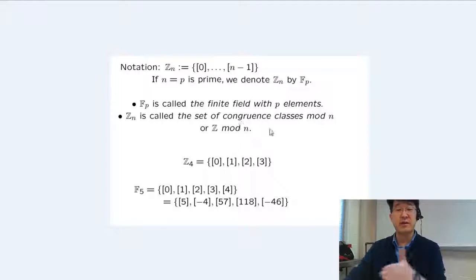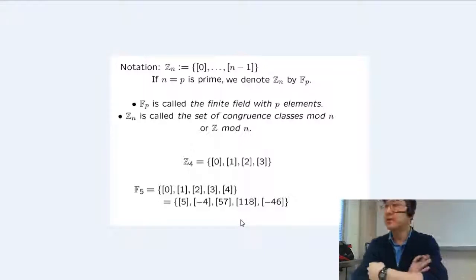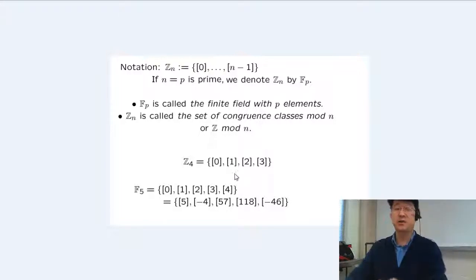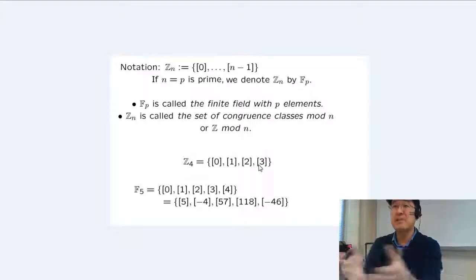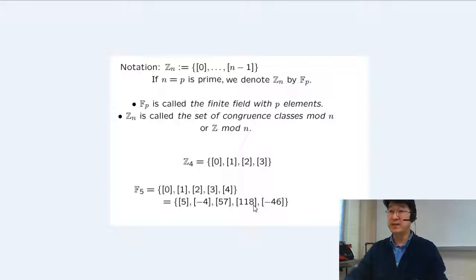Z mod N is called the set of congruence classes mod N. Let's look at Z mod 4 — how many bags? Four bags. If you pull out zero, this bag has zero in it. If this bag has eight in it, that's the same bag as zero. For F5 — five bags — this bag has 5 in it, which is the same bag as 0. And 118: the bag has 118 in it, but that's the same bag as 3. Five bags — that's the finite field with five elements.